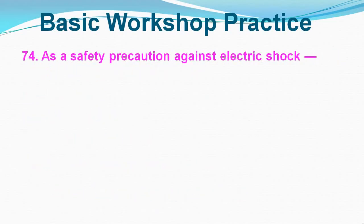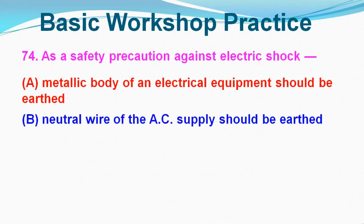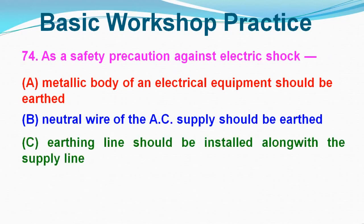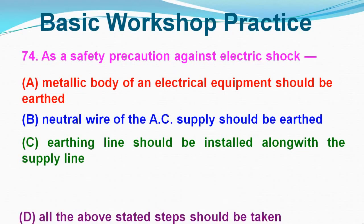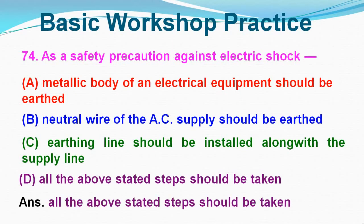Question No. 74: As a safety precaution against electric shock, which of the following should be done? Option A: Metallic body of electrical equipment should be earthed, Option B: Neutral wire of the AC supply should be earthed, Option C: Earthing line should be installed along with the supply line, Option D: All of the above stated steps should be taken. Correct answer is Option D.